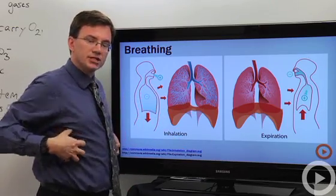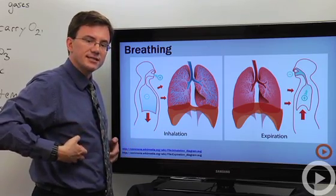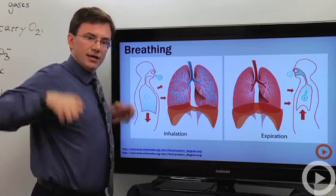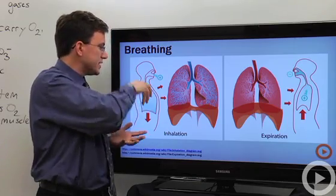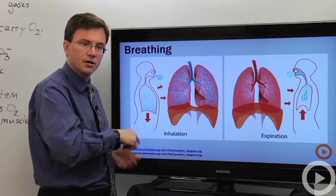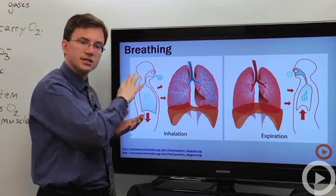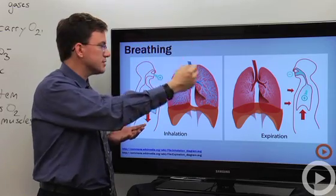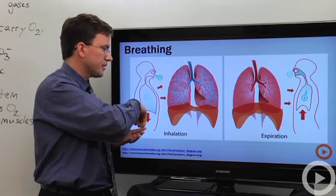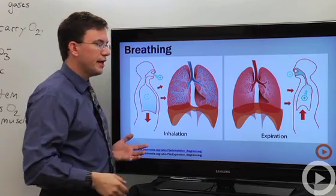Your ribcage can move a little bit so you have muscles on the outside of the ribcage that help pull it up and that helps increase the space of your chest cavity. By increasing the space, that drops the pressure compared to the outside so air rushes in from the higher pressure outside.